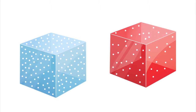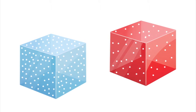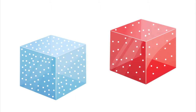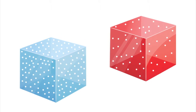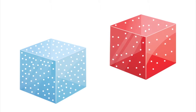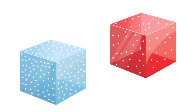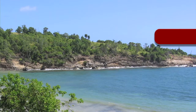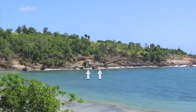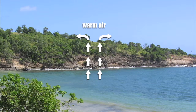Warm air is lighter and less dense. That's why cold air sinks and warm air rises. Air begins to move when the sun heats the land and warms the air above. Warmer air pushes upward because it is less dense.